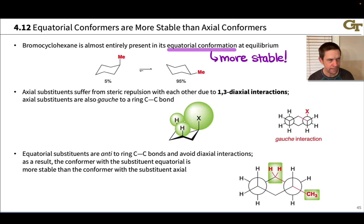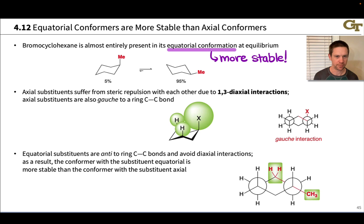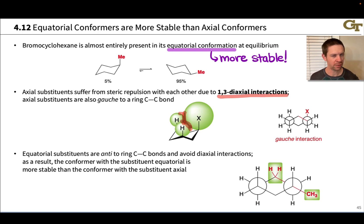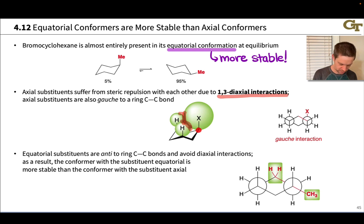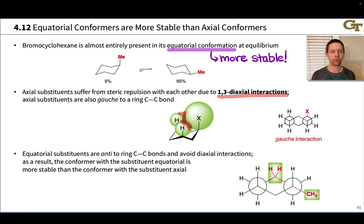Why is the equatorial conformer more stable? Primarily because of strains in the axial conformer. There are two categories: one is a steric strain known as a 1,3-diaxial interaction, reminiscent of flagpole interactions in the boat conformer, occurring between hydrogens or substituents in a 1,3 relationship. For example, the H at carbon-3 bumps into the substituent at carbon-1 — this steric repulsion between axial groups two carbons apart is called a 1,3-diaxial interaction.